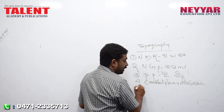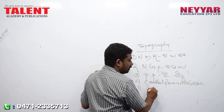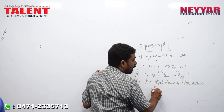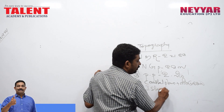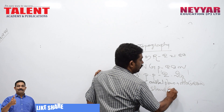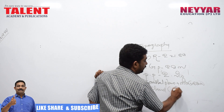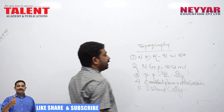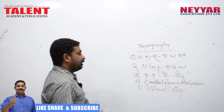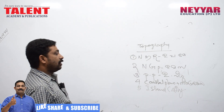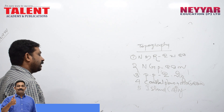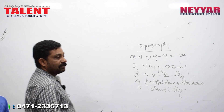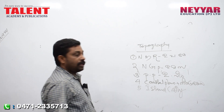India has five physical divisions: First, North End Mountain Rangers. Second, Northern Great Plain. Third, Peninsular Plate. Fourth, Coastal Area. And last one, Islands.